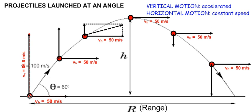Any projectile launched at any speed and angle that results in a vertical component of 86.6 m per second will reach exactly the same height. It is important to remember that we deal with the vertical and horizontal motions totally independently. We can find anything about the vertical motion by considering an initial vertical velocity of 86.6 m per second and using kinematics equations. The horizontal motion remains constant throughout its flight.